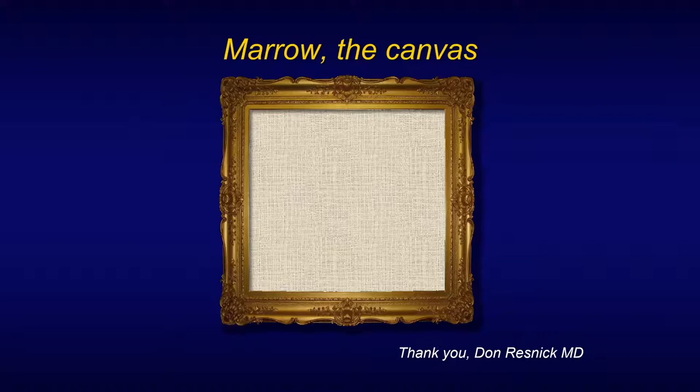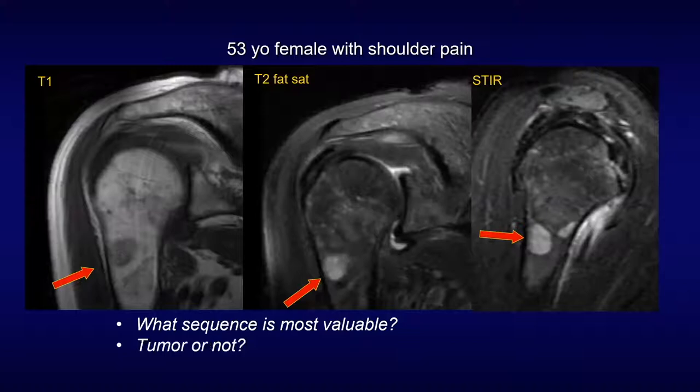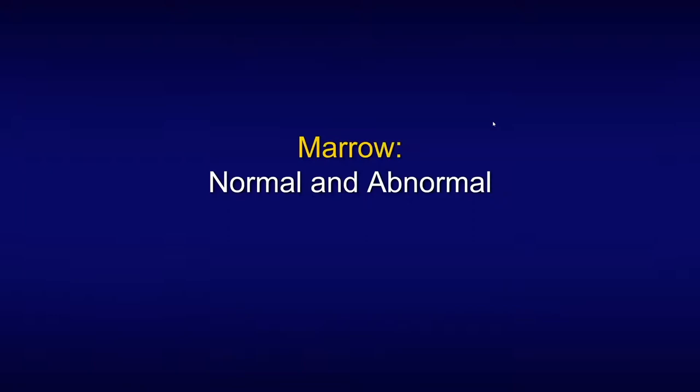On a less poetic note, I'm going to just show you this case, and this is the essence of this talk. When you have a funny marrow lesion on musculoskeletal MRI, the questions that we aim to answer are: what sequence is most valuable? Is this a tumor or not? And how certain are we? Are we going to say something and then still say correlate with biopsy if necessary? I personally prefer to err on the side of being right and definitive.